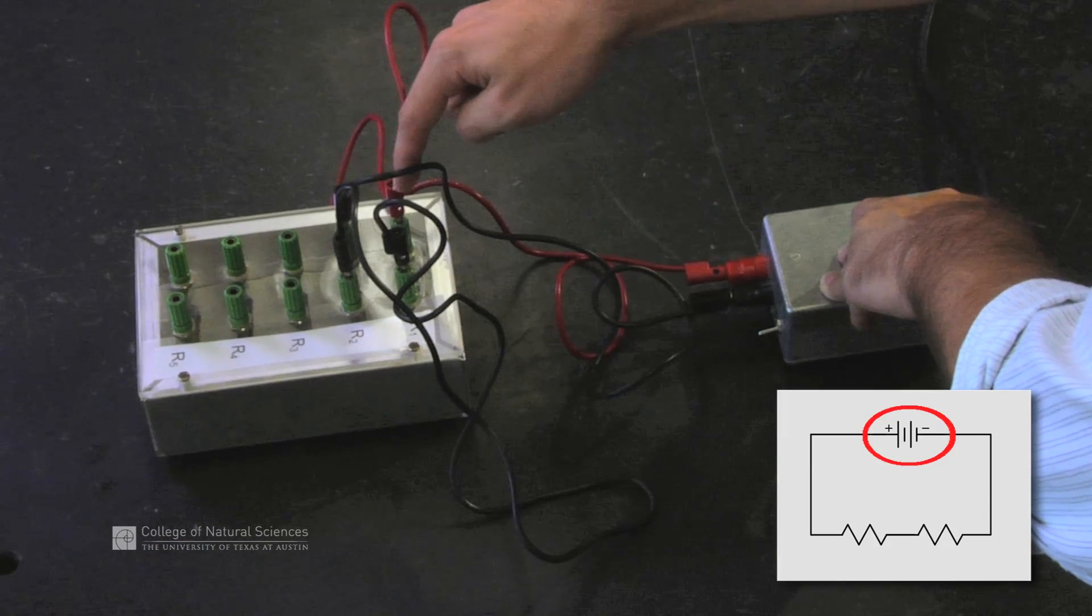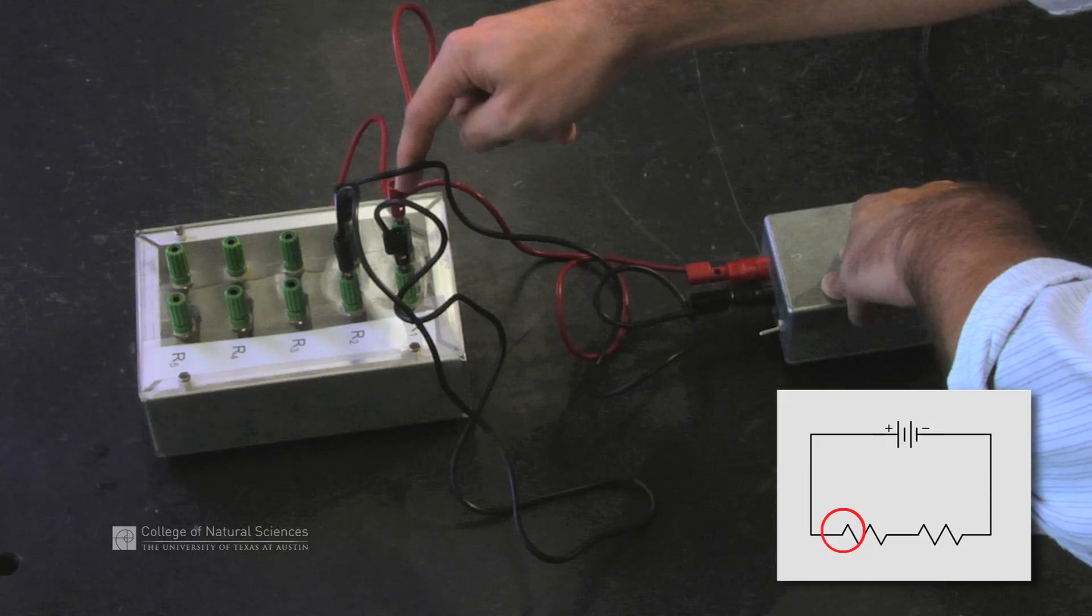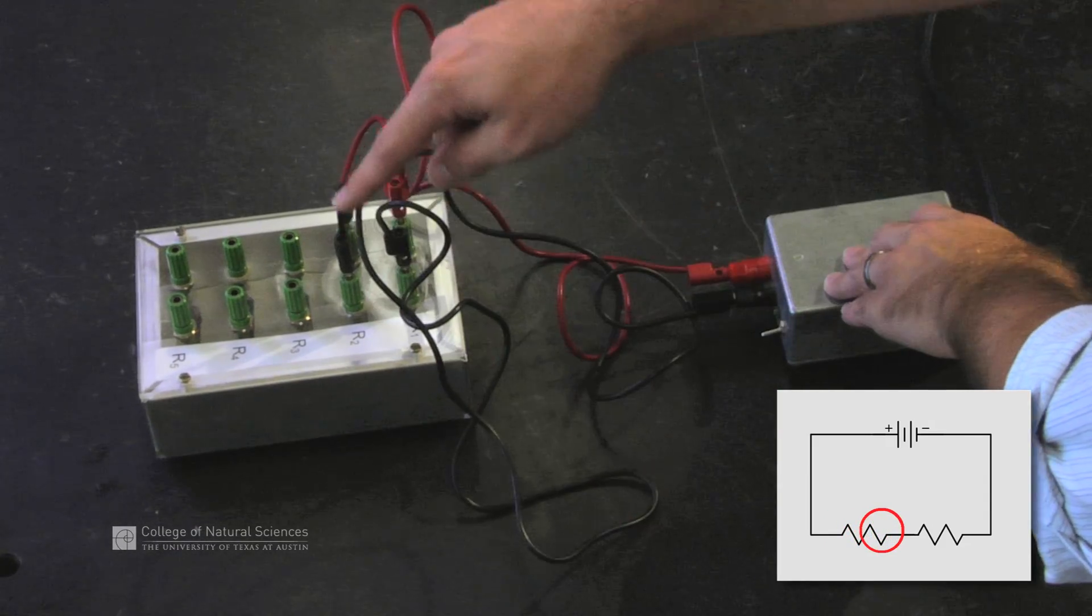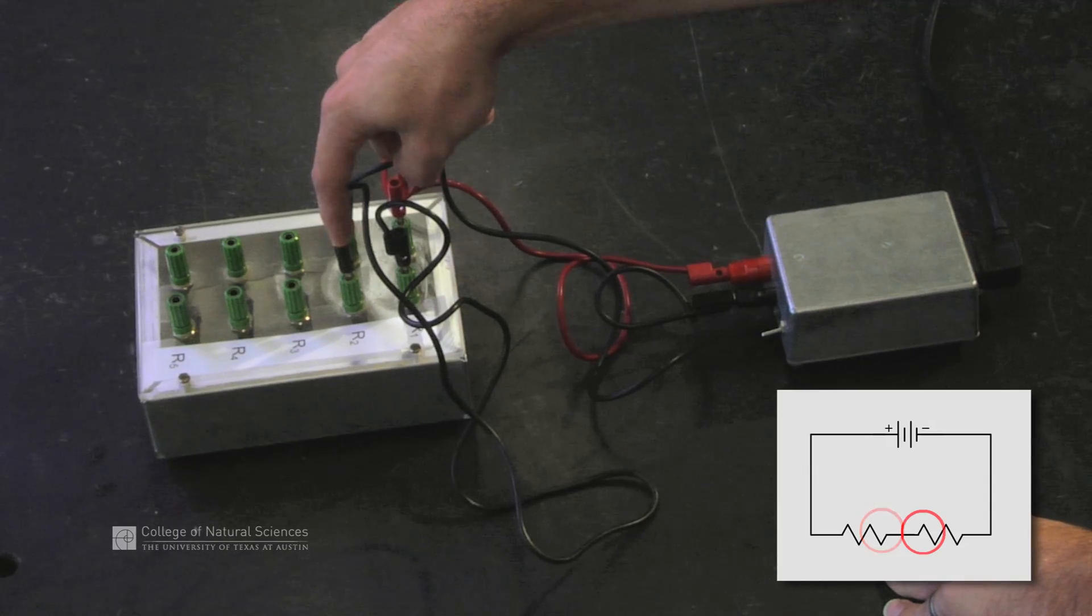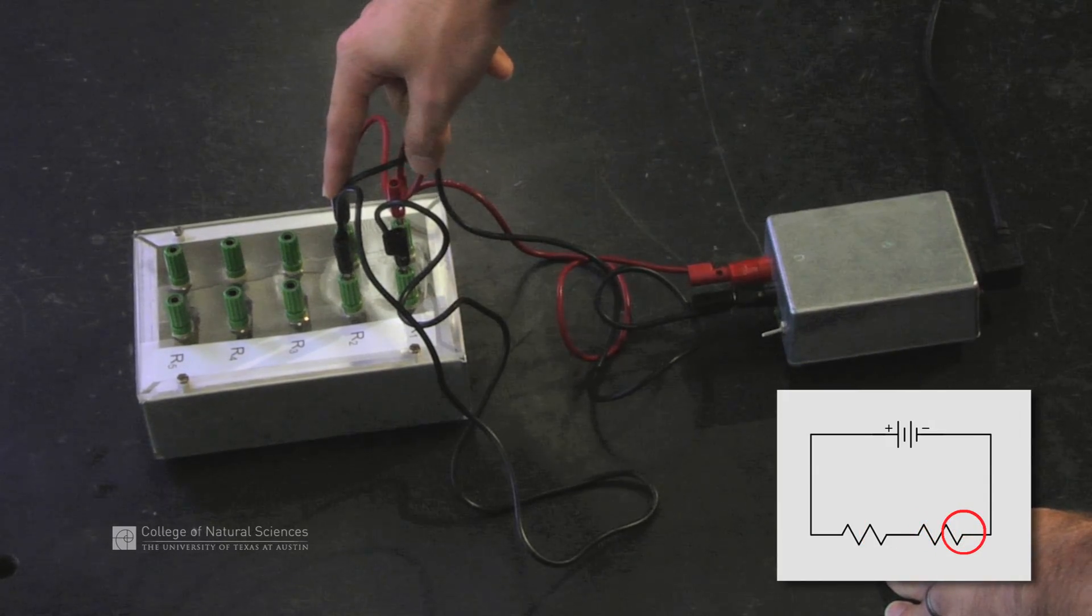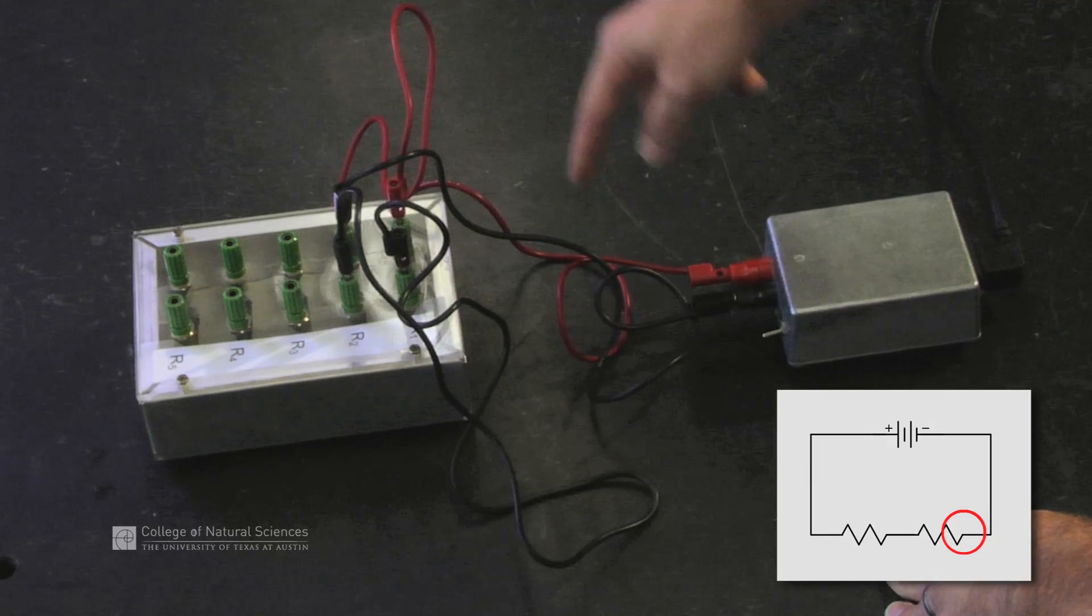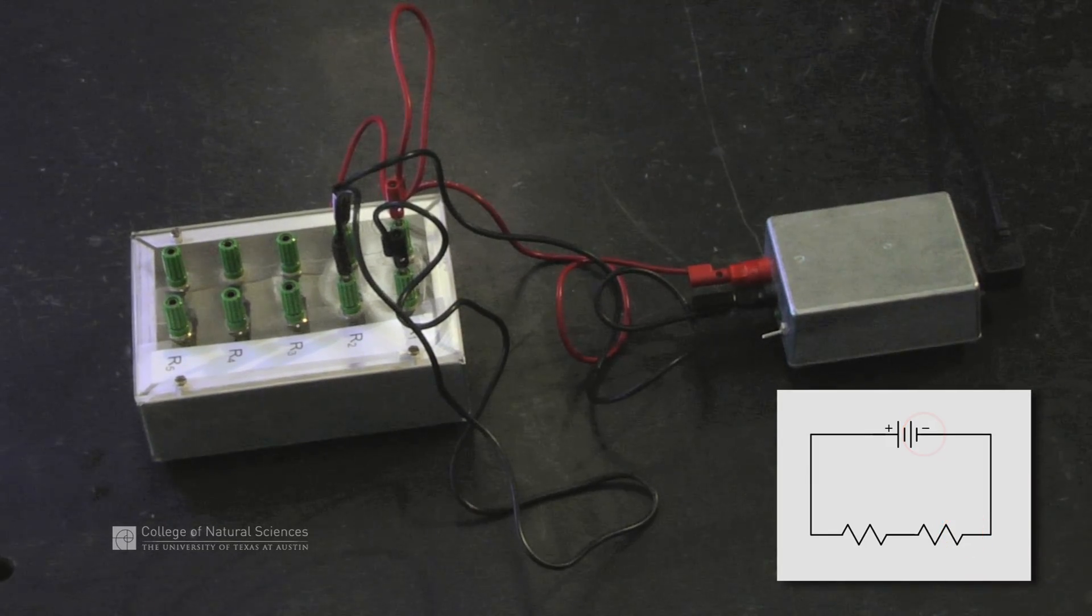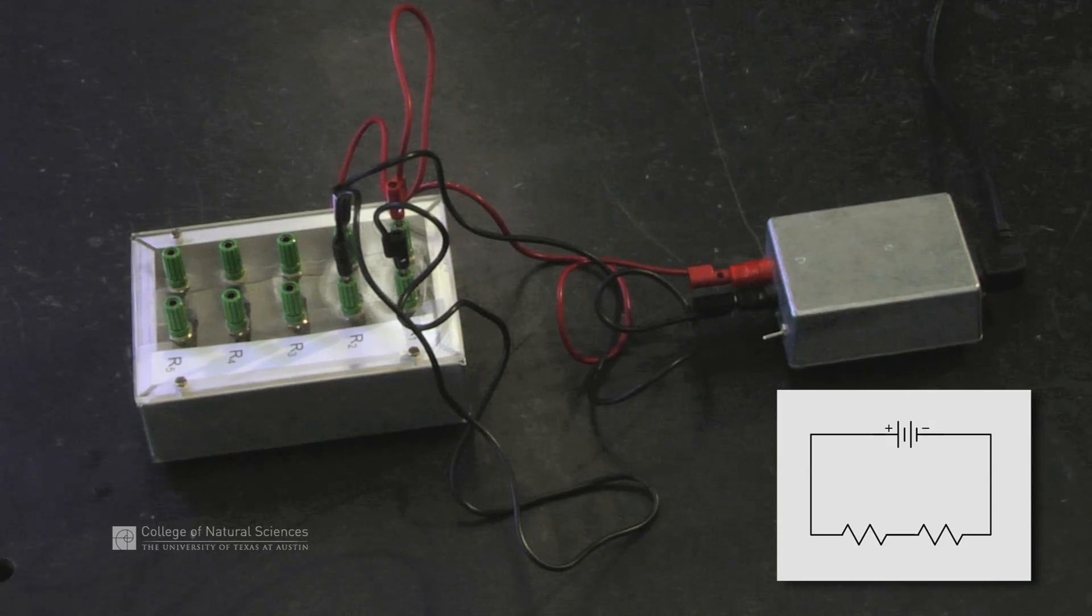Follow it along the wire, we go to our first resistor, through our first resistor, through the second wire to the second resistor, through the second resistor, we hit the third wire. The third wire goes back to the power supply and our circuit checks out.